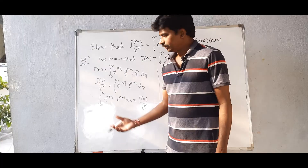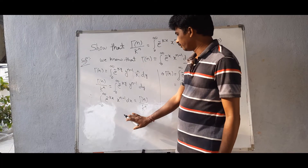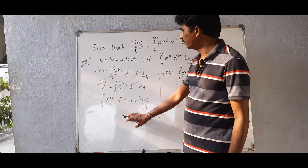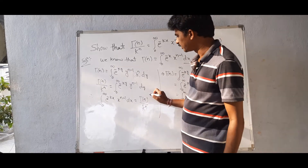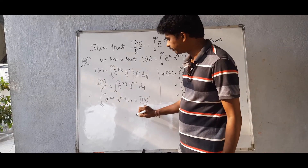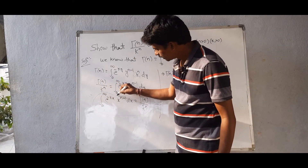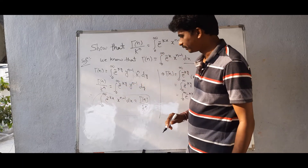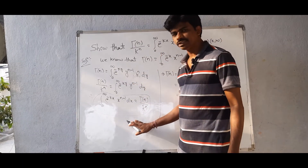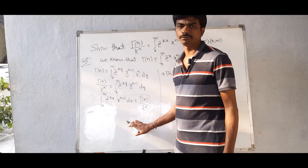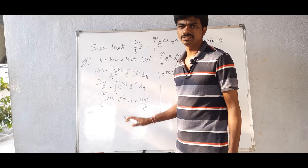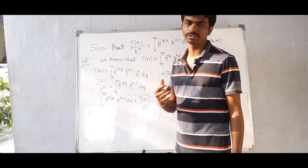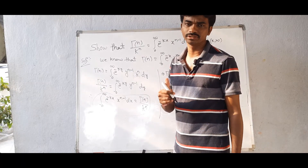Therefore, integral from 0 to infinity of e power minus kx, x to the power of n minus 1, dx equals gamma of n by k power n. This is a very very most important problem, and we will use this formula in some further problems. Please subscribe, like and share. Thank you everyone.